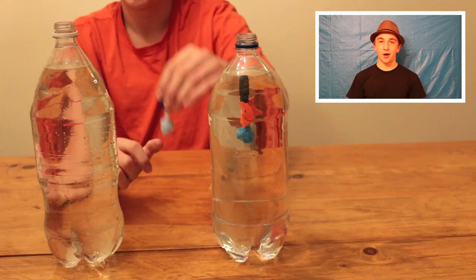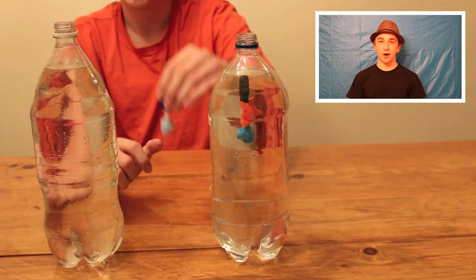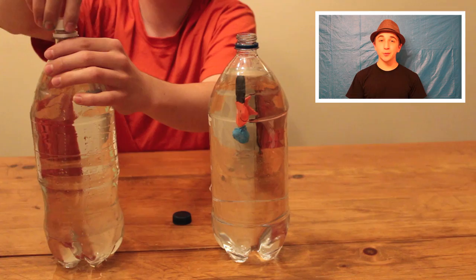Step 4. Once your fish is floating properly, drop it into your bottle. Then seal it tight with the cap. Make sure your bottle is almost full. Squeeze your bottle and watch your fish swim to the bottom. Then let go and watch your fish swim back to the top.